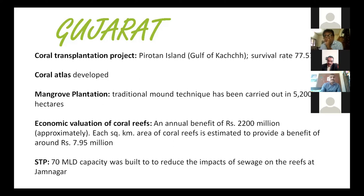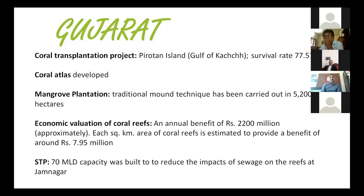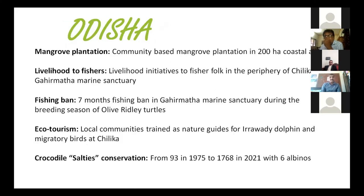Gujarat built one of the country's biggest sewage treatment plants with 70 million liters per day capacity in Jamnagar to ensure that water from nearby districts does not pollute the coral area. This is done through a public-private partnership model. There are a lot of learnings from this approach in ICZMP.